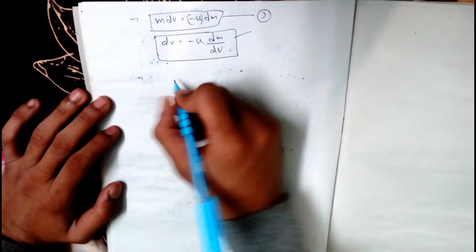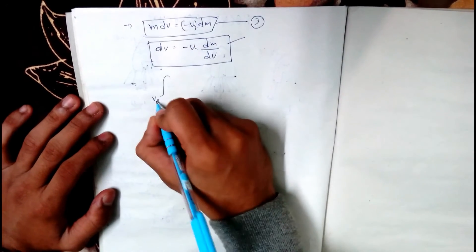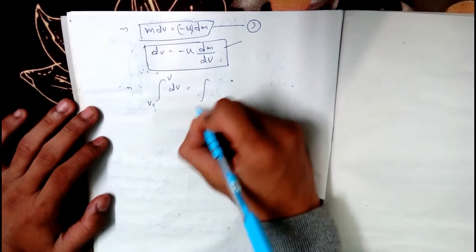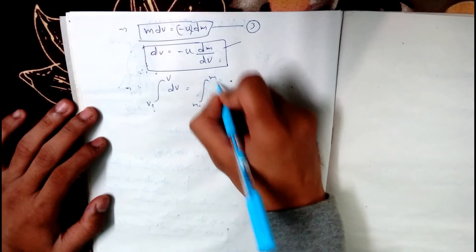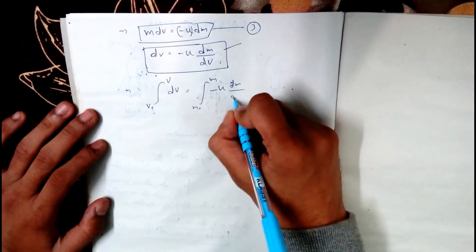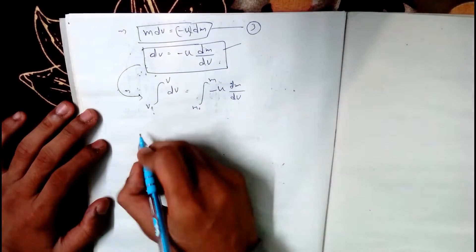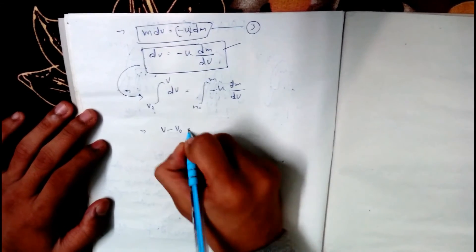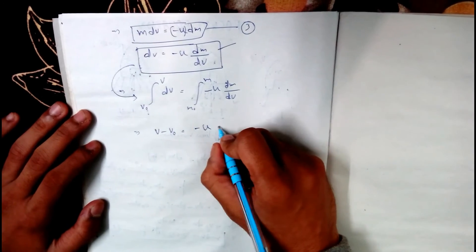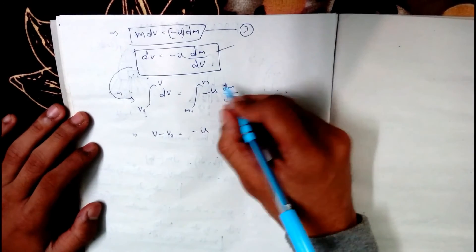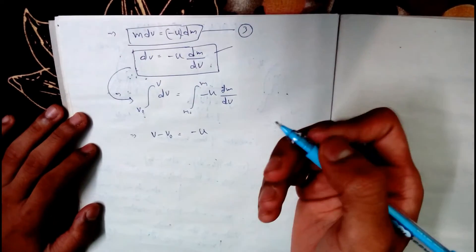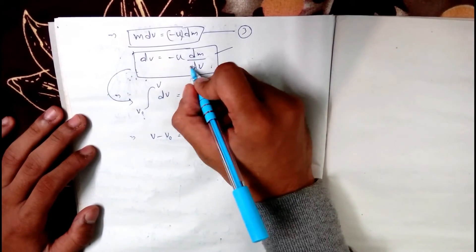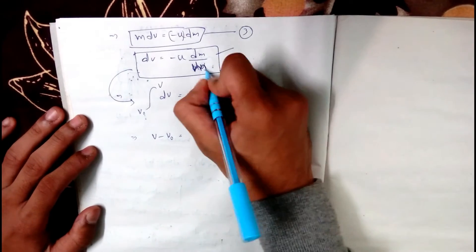By integrating both sides, with limits from initial velocity v0 to v for velocity, and from m0 to m for mass: integrating dv from v0 to v, and integrating minus u·dm/m from m0 to m. After integrating, v minus v0 equals minus u times log(m/m0), which gives v minus v0 equals u·log(m0/m).